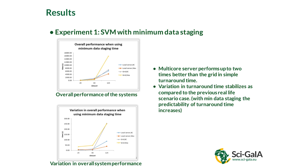To remove the data staging effect, we took the minimum data staging time observed and made that the standard, keeping processing time unchanged. When we did that, the variation started behaving more normally. On the computational grid it was still a bit higher than on the local server. Previously the local server performed up to four times better than the grid; after normalizing for data staging, that gap reduced to about two times better.